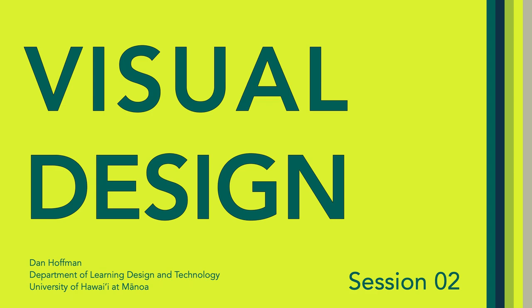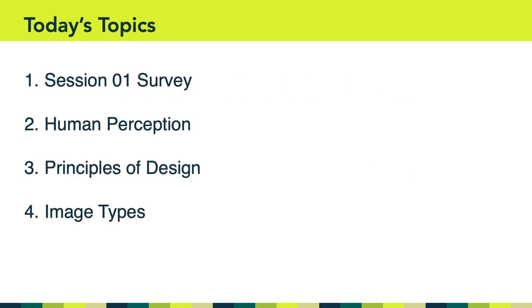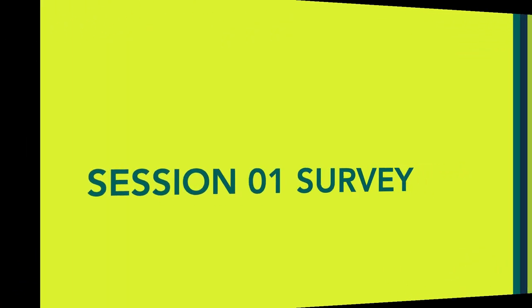Hello, everyone. Welcome to session two of LTCH 620. This week we're going to cover four topics. First, I want to review the results of the session one survey. Then we'll talk about what we've learned related to human perception. Then I want to talk about the importance of the principles of design, and we'll close out by talking about a couple of different image types. So let's get started.